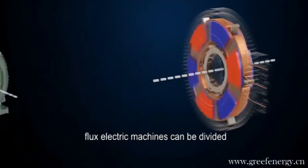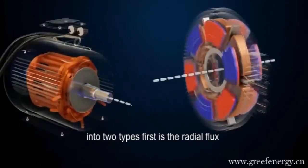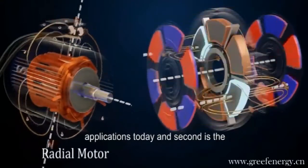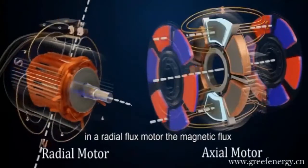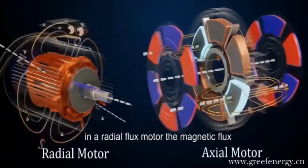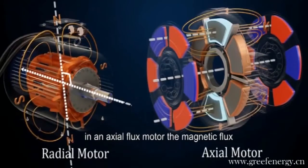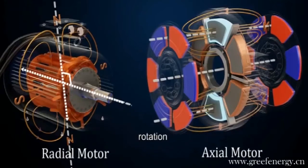Based on the orientation of magnetic flux, electric machines can be divided into two types. First is the radial flux motor, which is used in 99% of applications today. And second is the axial flux motor. In a radial flux motor, the magnetic flux is perpendicular to the axis of rotation. In an axial flux motor, the magnetic flux lines are parallel to the axis of rotation.